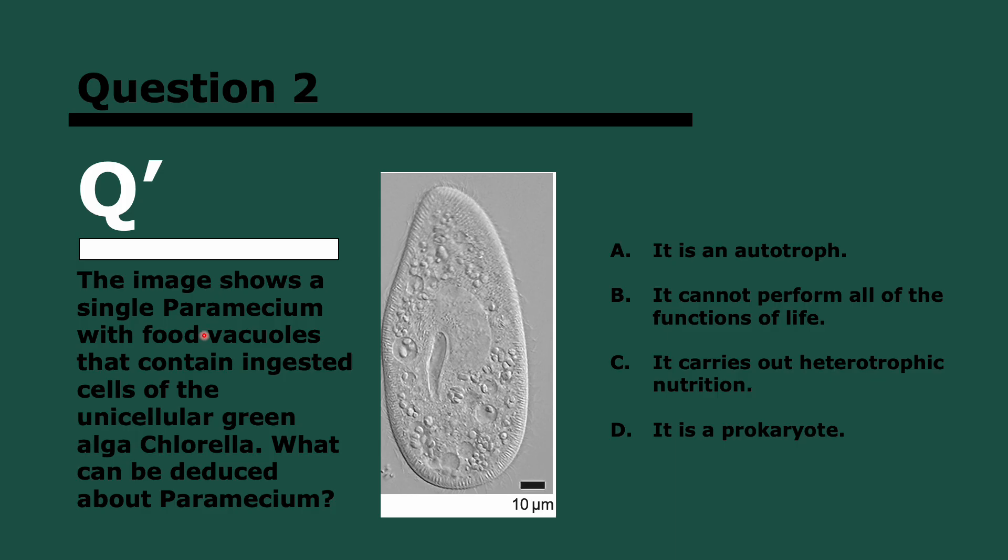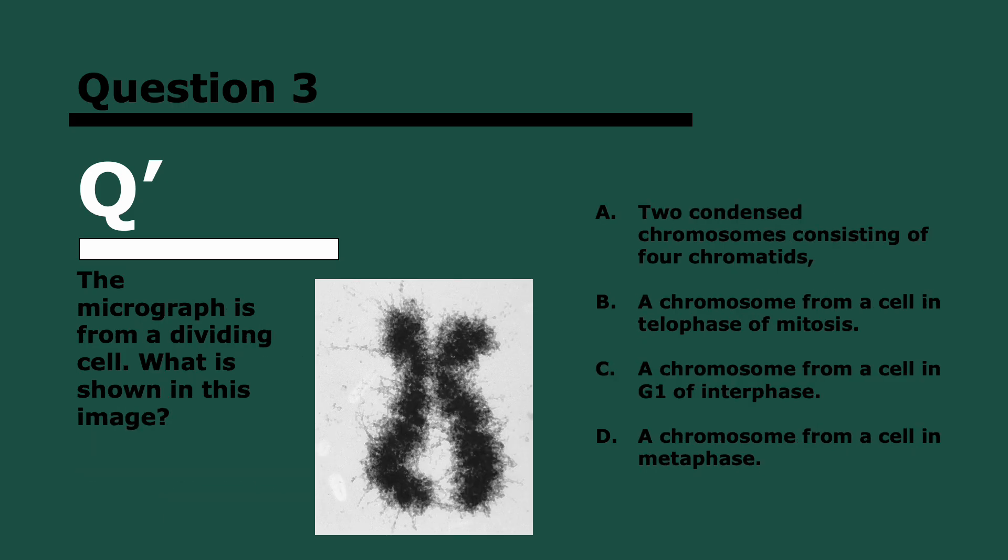Question two, which was also in the higher level paper. The image shows a single paramecium with food vacuoles that contain ingested cells of the unicellular green alga chlorella. What can be deduced about paramecium? Three, two, and one. It carries out heterotrophic nutrition. It's telling us that it's eating something else, so that's what heterotrophs do. We don't know whether it's autotrophic, we don't know it can't perform all functions of life, and nothing indicates it's a prokaryote. The only thing we know is it's eating another organism, therefore heterotrophic nutrition.